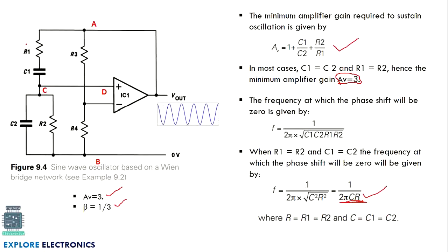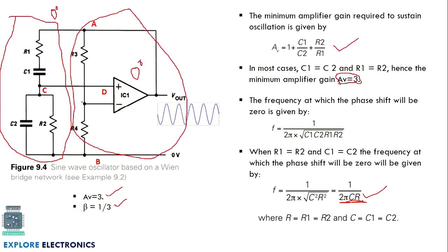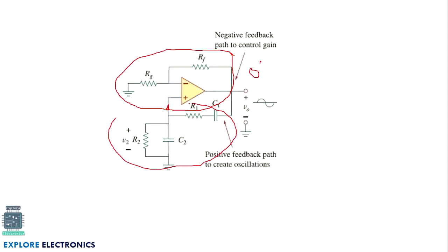In the implementation, the bridge network acts as positive feedback and the remaining circuit is a non-inverting op-amp amplifier. A non-inverting amplifier produces 0° phase shift. The Wien bridge feedback network also produces 0° phase shift at the resonant frequency. Therefore, the overall circuit satisfies the oscillation condition and produces sustained oscillations at the frequency F = 1/(2π·CR).